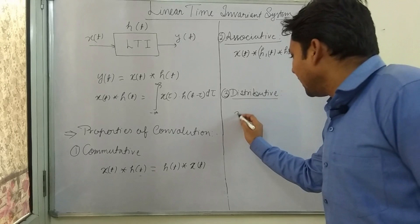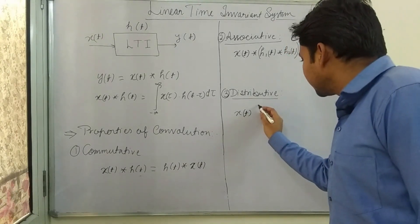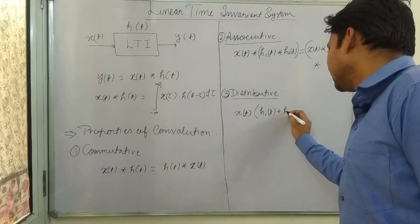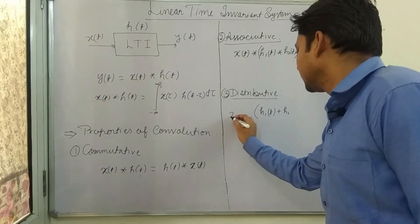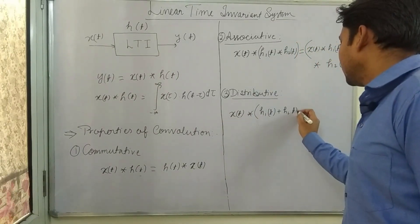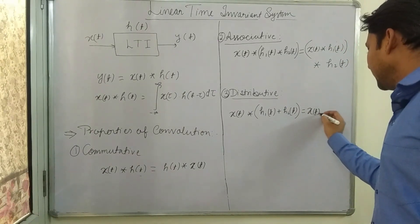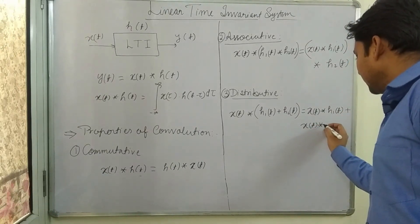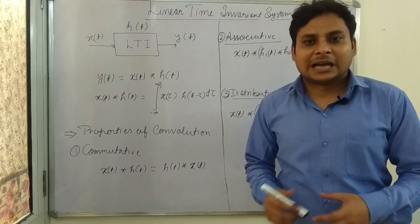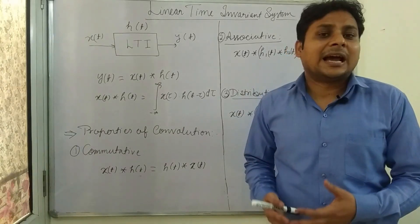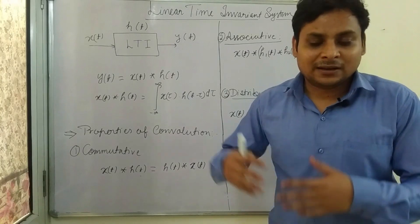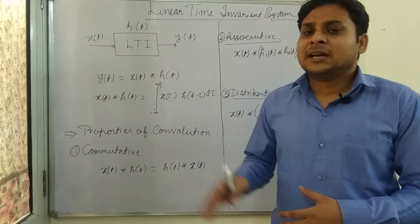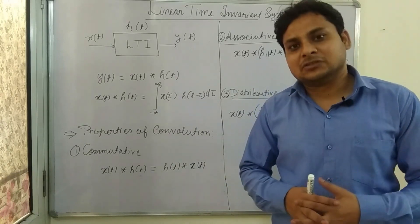Now, the distributive property. If signal x(t) is convolved with h₁(t) + h₂(t), then it gives x(t)*h₁(t) + x(t)*h₂(t). I hope you have understood convolution and its importance in LTI systems. In the next lecture, we will study convolution and impulse response for the discrete time system. If you have any doubt, please put it in the comments and I will try to resolve it. Thank you very much.